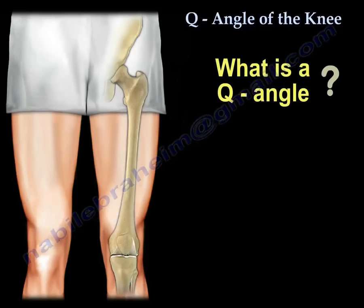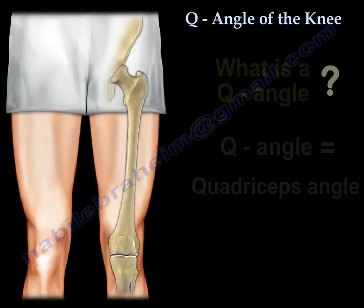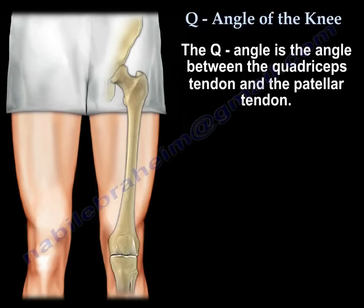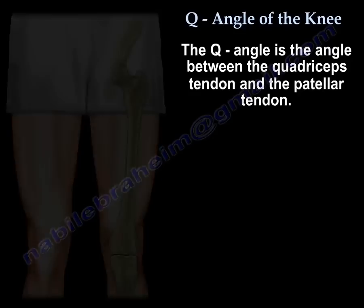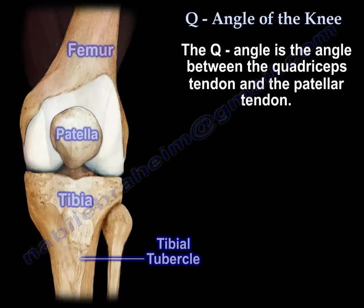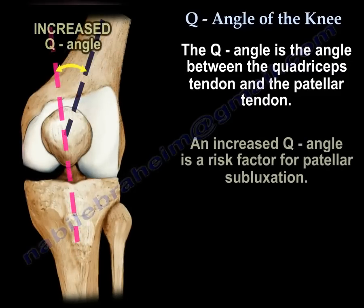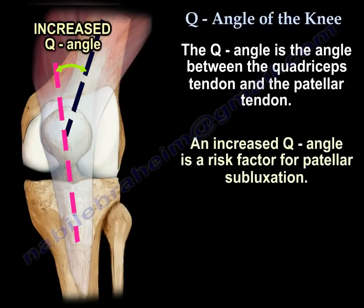What is a Q-Angle? The Q-Angle is the quadriceps angle — specifically, the angle between the quadriceps tendon and the patellar tendon. An increased Q-Angle is a risk factor for patellar subluxation.